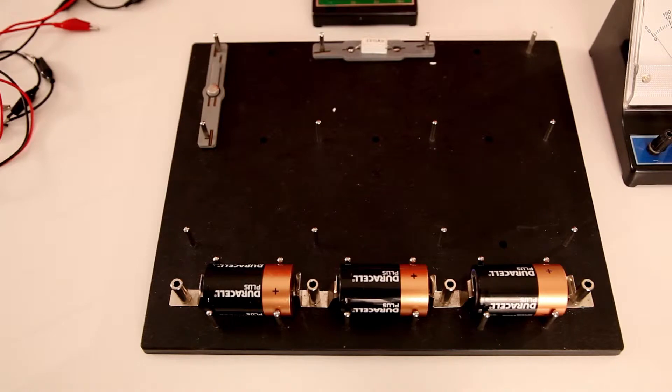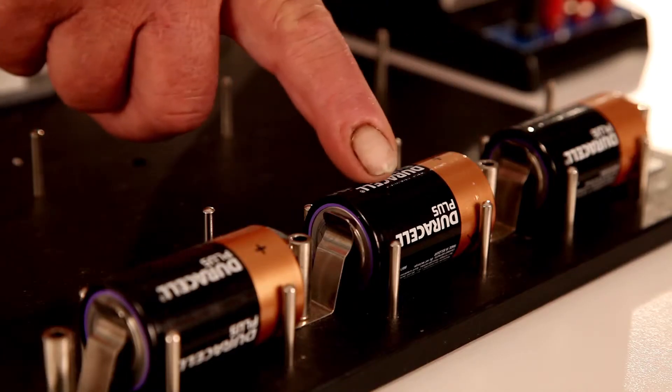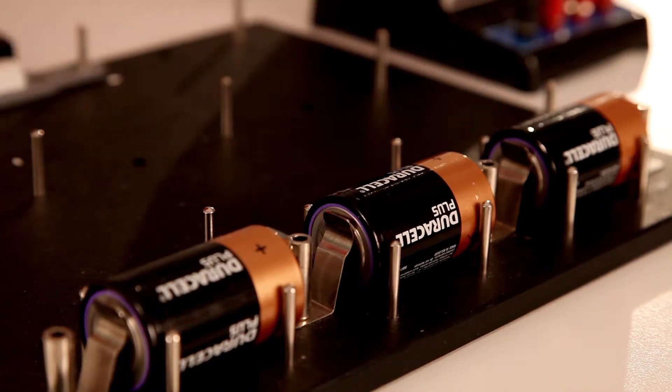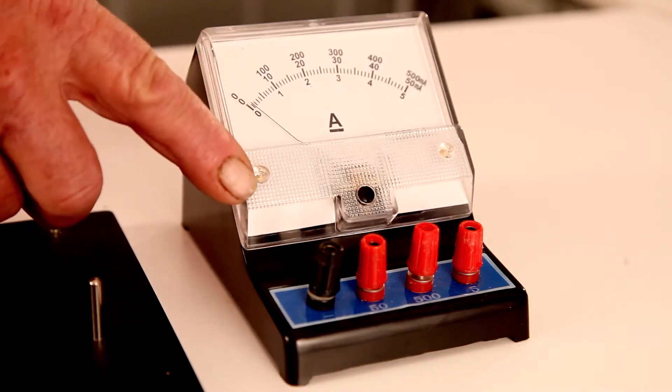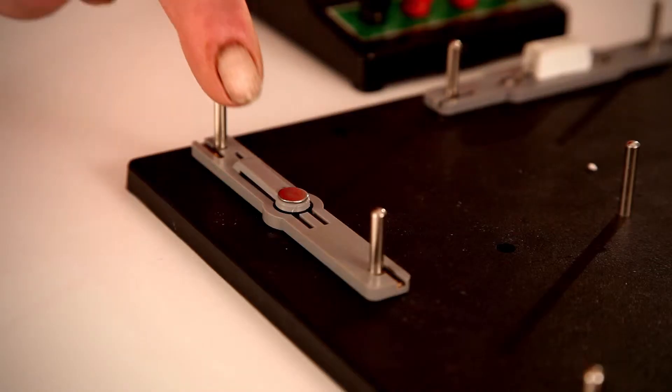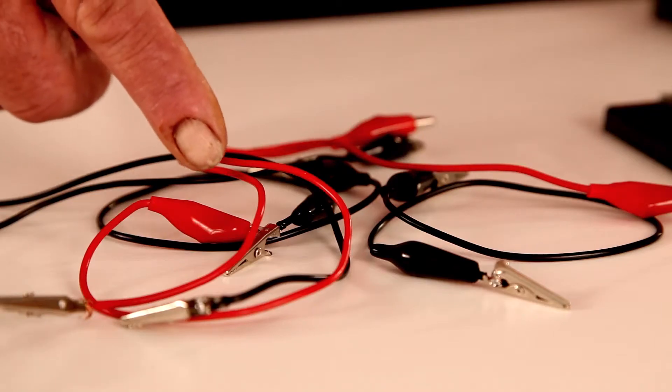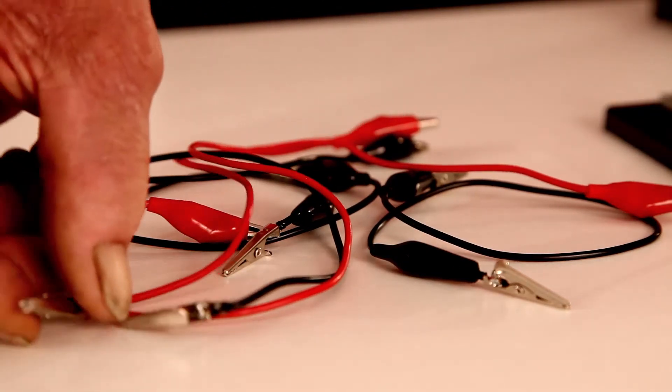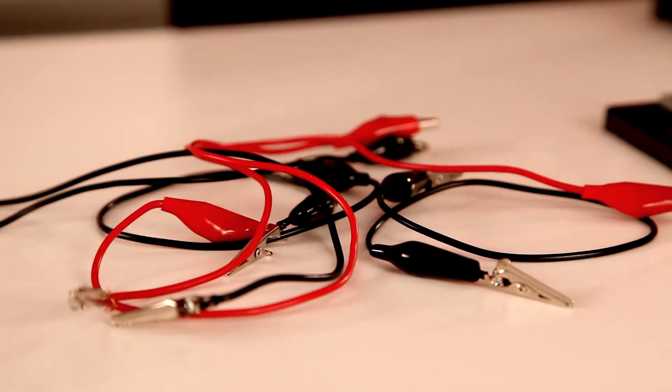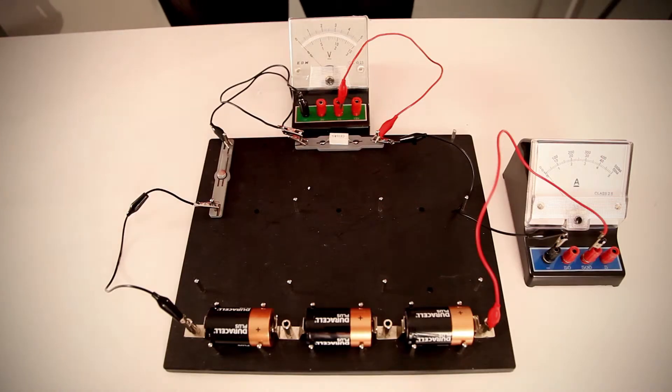The items needed for this experiment are an electric circuit board, three cells of 1.5 volts each, an ammeter, a resistor, a switch, a voltmeter, and conducting wires with crocodile clamps. An electric circuit is set up as follows.